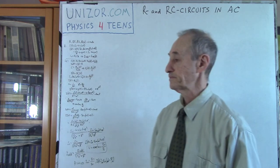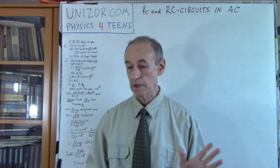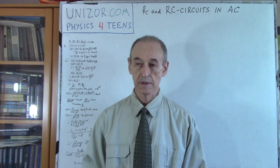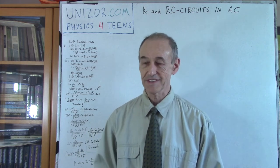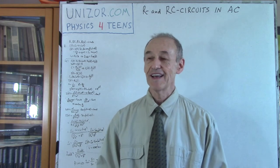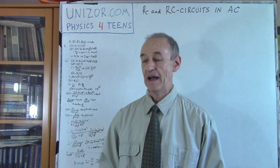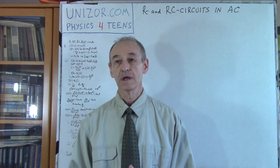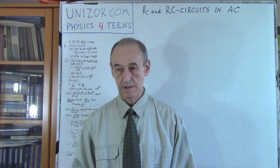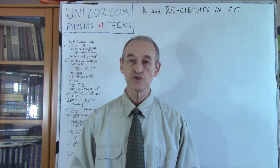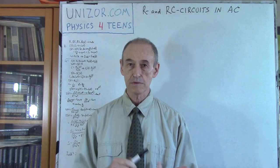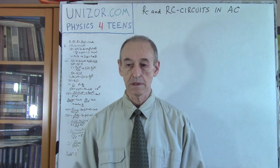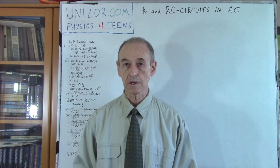This is a really involved topic and it has a lot of math, which I actually consider to be a good thing — it brings certain precision. We will talk about different alternating current circuits. We have three major elements: resistors, capacitors, and inductors, which can participate in AC circuits.